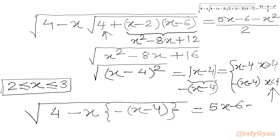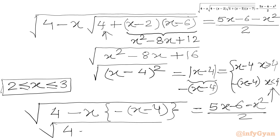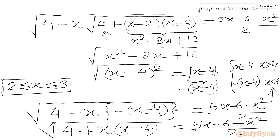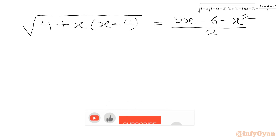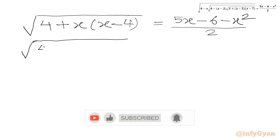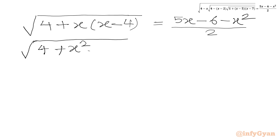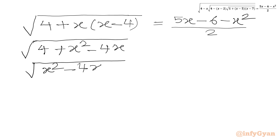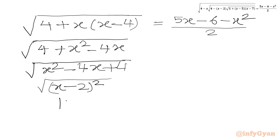Simplifying the LHS: √(4 - x) · (4 - x) = (4 - x)·(x + ...) — expanding gives x² - 4x + 4, which is the perfect square (x - 2)². So √((x-2)²) = |x - 2|.